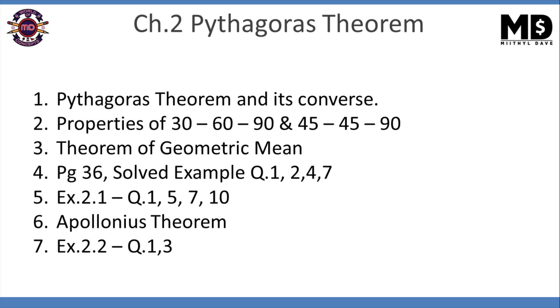Chapter 2: Pythagoras theorem. Pythagoras theorem and its converse is an important one. Properties of 30-60-90 and 45-45-90 is an important one. Theorem of geometric mean. On page number 36, solved example 1, 2, 4, and 7 are important. From exercise 2.1, question 1, 5, 7, and 10 is important. One question based on Apollonius theorem can be asked. From exercise 2.2, try to solve question 1 and 3.